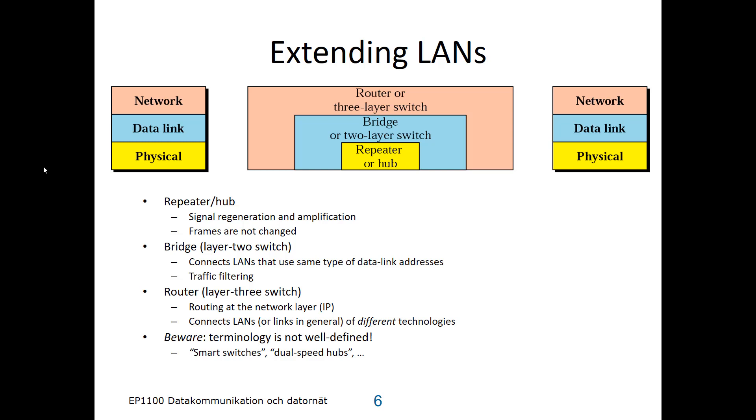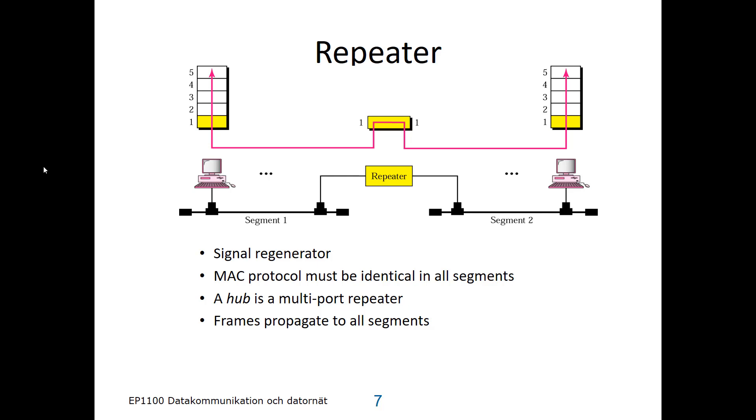The repeater, as I said, is just providing signal regeneration. The MAC protocol on both sides of the repeater must be identical, and the hub is just a multiport repeater that could connect several different LANs, more than just one. But the extended LAN functions as one LAN.